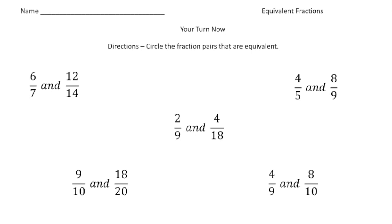Welcome back. Let's go over these practice problems — you have to determine which fraction pairs are equivalent. The first one: six sevenths and 12 fourteenths. I know that six times two gives me 12, and seven times two gives me 14. So because both are multiplied by the same factor, I know these two fractions are equal.